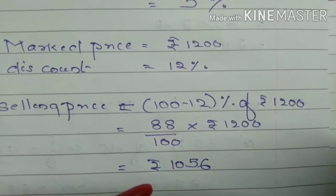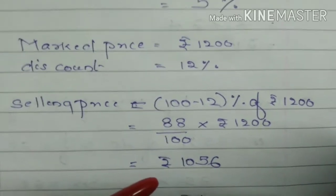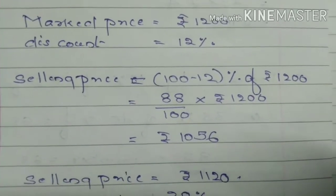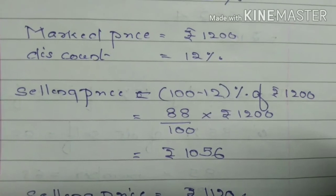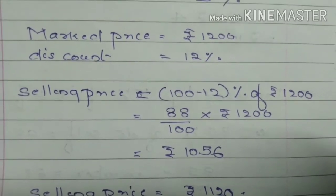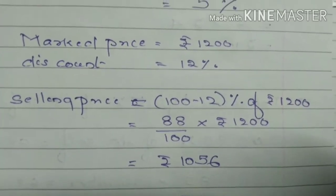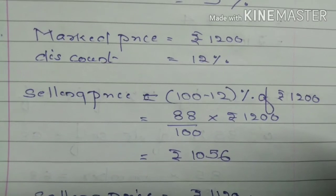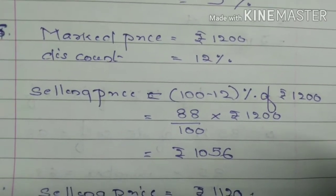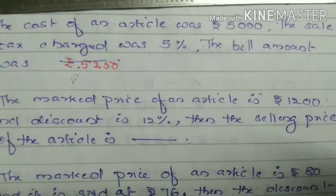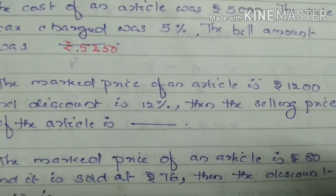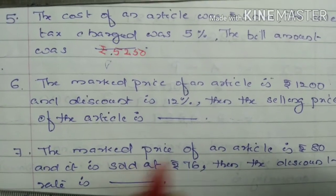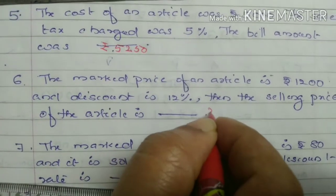When you simplify, you will get Rs. 1,056. So instead of Rs. 1,200, only Rs. 1,056 they have to pay. So the selling price is Rs. 1,056.